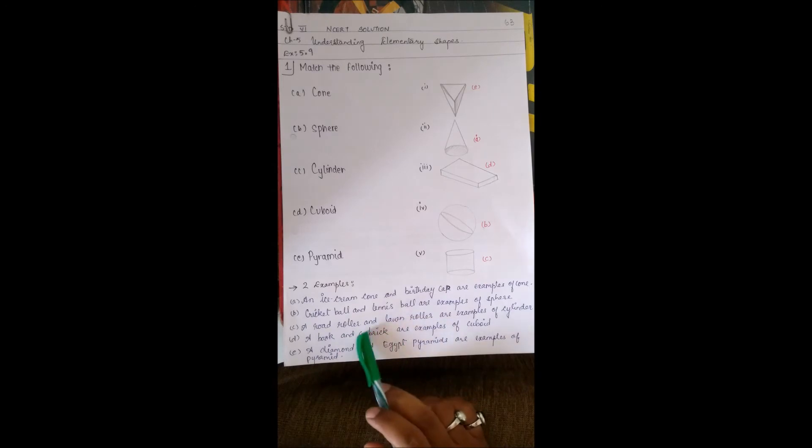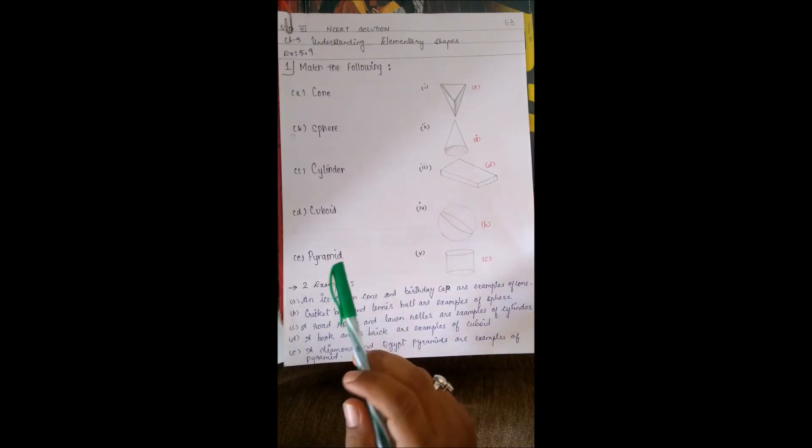road roller and lawn roller. Next one is cuboid. Examples: a book and a brick. Last one is pyramid. Examples: a diamond and Egypt pyramids. So this was the first question of Exercise 5.9. Now let's see